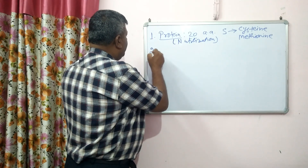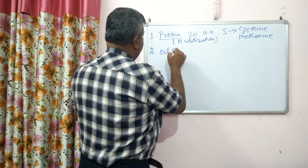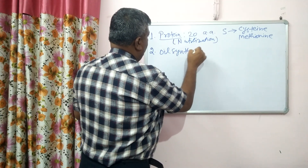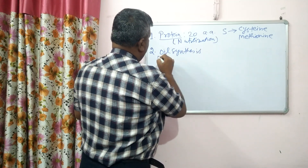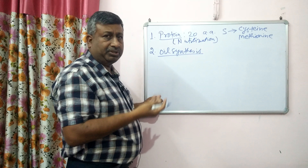Another important function of sulfur is in oil synthesis. Seeds accumulate oil, particularly in oil seed crops like mustard, groundnut, and soybean, which have more oil content compared to other cereal or legume crops.